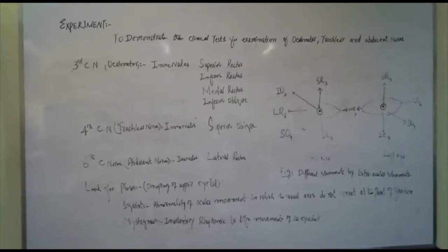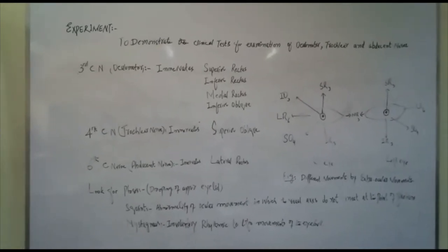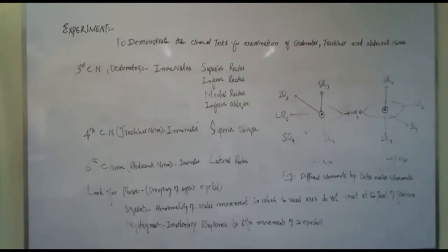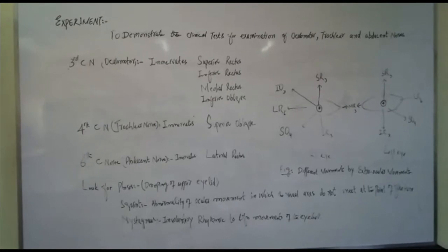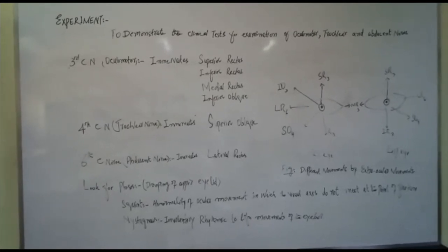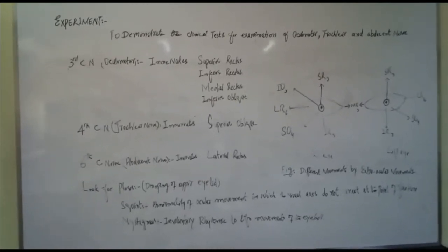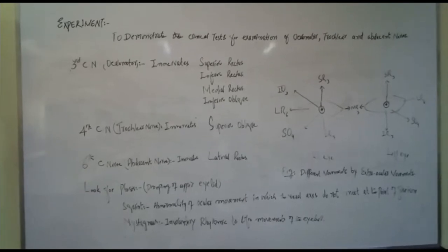Look for ptosis, drooping of upper eyelid. Squint, abnormality of ocular movement in which the visual axes do not meet at the point of fixation. Nystagmus, involuntary rhythmic to-and-fro movements of the eyeball.